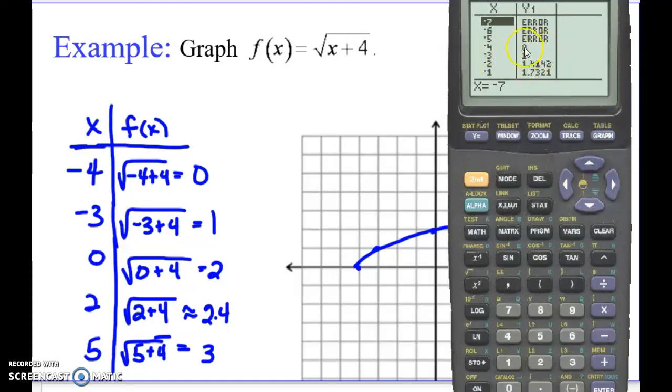Because if I go backwards from negative 4, I start getting errors. And the reason is because if you try putting negative 5 in here, x plus 4 would be negative 5 plus 4, which is a negative 1. The square root of negative 1 is an imaginary number, and we can't graph that. So we would use our table to pick out some nice ordered pairs.